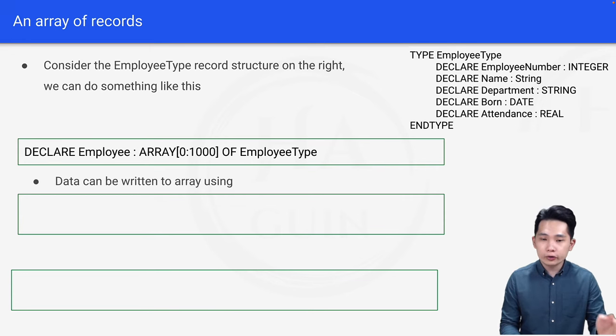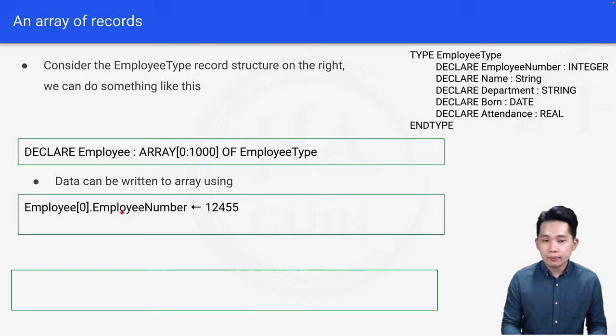And next, data can be written to the array using Employee[0].EmployeeNumber ← 12455. Which means that this 0 actually stands for the first element inside the array, dot EmployeeNumber, which means that this is one of the identifiers inside the record structure.